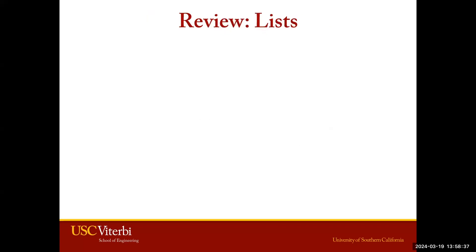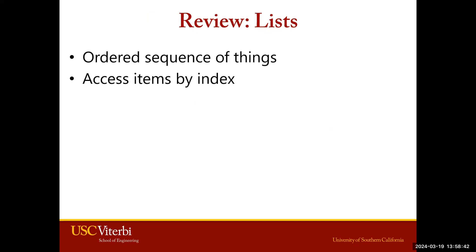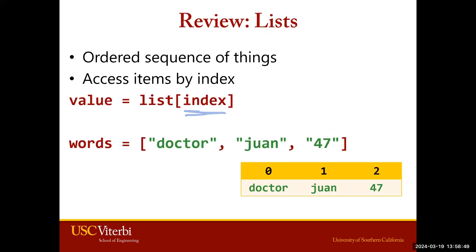Let's start by reviewing lists. Lists are an ordered sequence of things, and to access items within our list, we use indices. We provide an index associated with the item. Let's take a look at our example list, words, which has a list of strings containing doctor, juan, and 47.